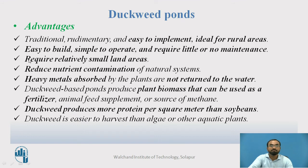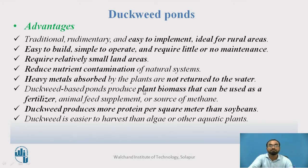The advantages of duckweed ponds: they are traditional, rudimentary, easy to implement, and ideal for rural areas. They are easy to build, simple to operate, require little or no maintenance, and need relatively smaller land areas. They reduce nutrient contamination of natural systems. Heavy materials are absorbed by plants and not returned to the water. Duckweed-based ponds produce plant biomass that can be used as fertilizer and can also be a source of methane. Duckweed produces more protein per square meter than soybeans and is easier to harvest than algae or other aquatic plants.